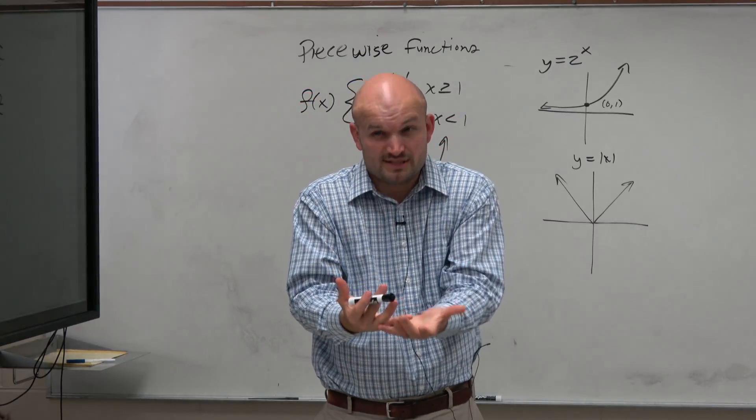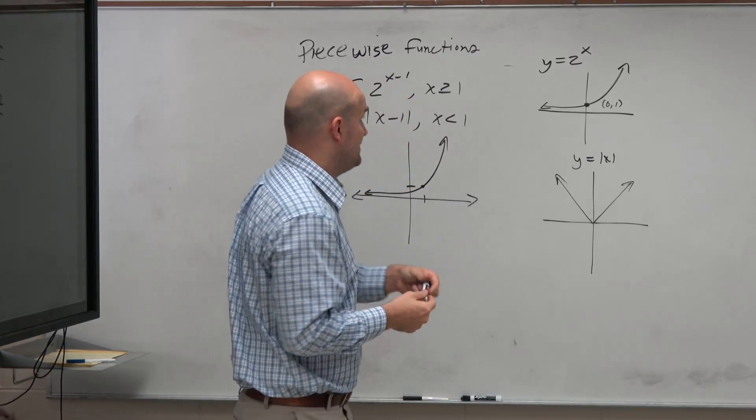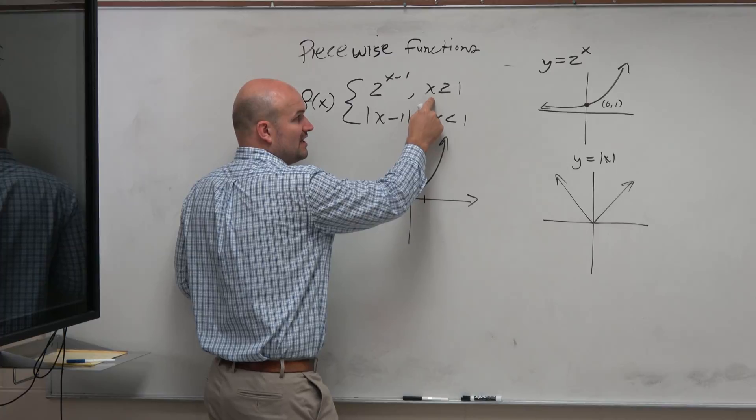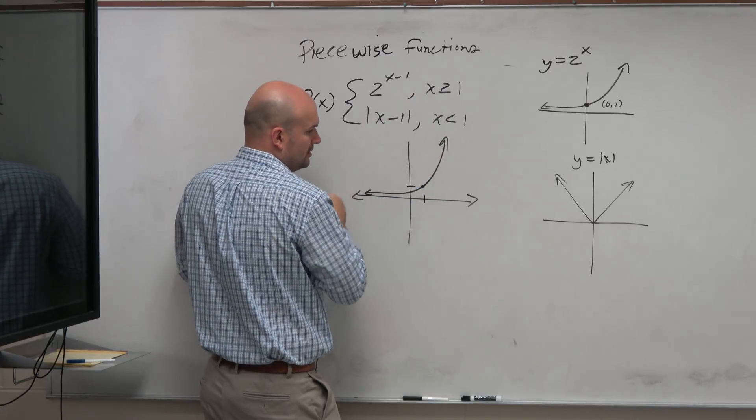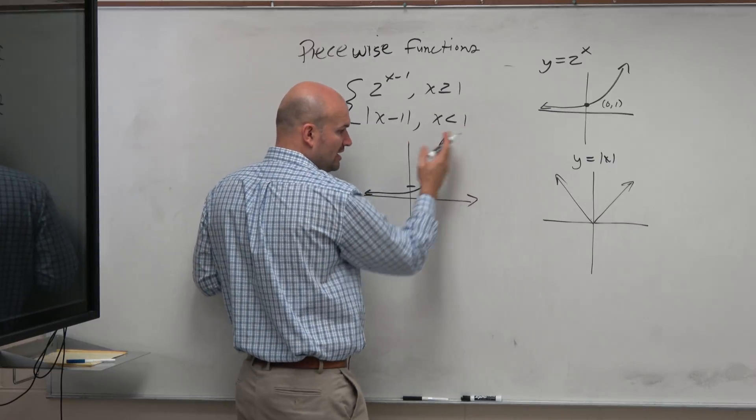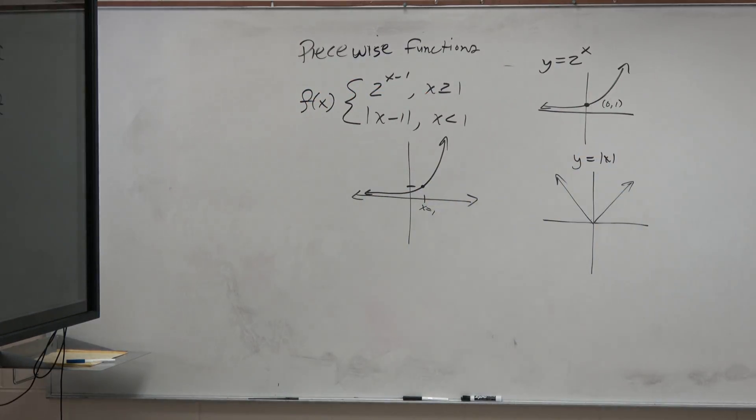And then what we really talked about for piecewise functions is, now we're going to add a constraint. And the domain constraint is, I only want to graph this function for the x values that are greater than or equal to 1. Well, here is where 1 is. So for x values greater than or equal to 1 is only going to be this section. So therefore, the rest of it needs to go away.